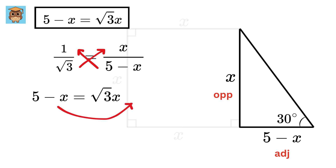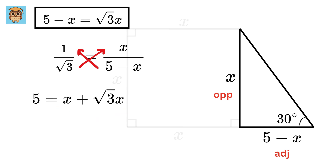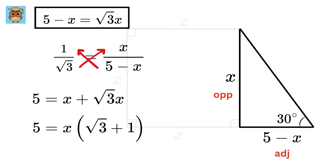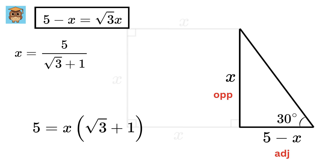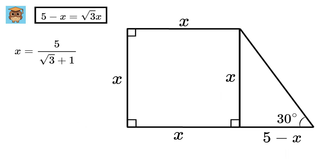Take x on this side. We get x plus root 3x equals 5. Take x as common to get x times (root 3 plus 1). So x equals 5 over (root 3 plus 1).